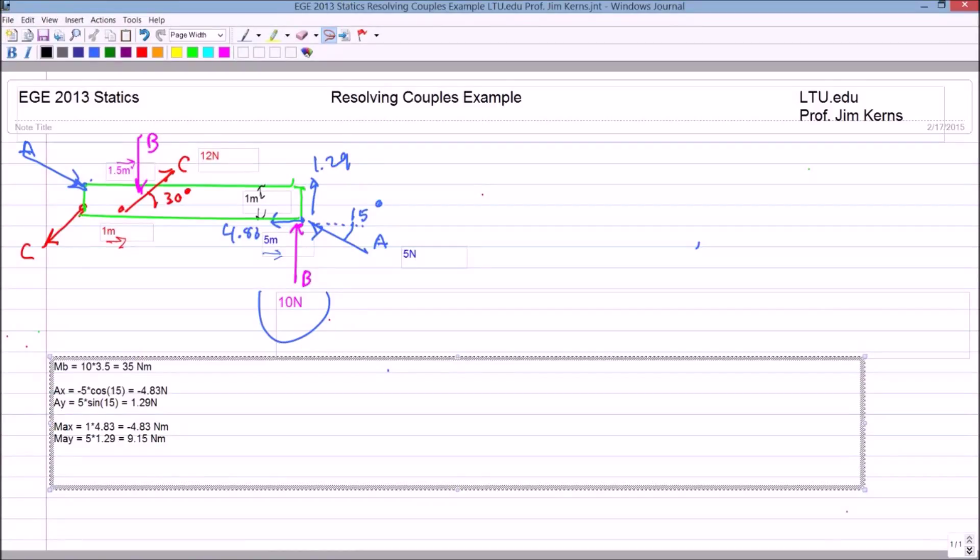So let's look at C now, and we'll do this in the cross product form. So the first thing I want to do is write the C vector in a Cartesian format.